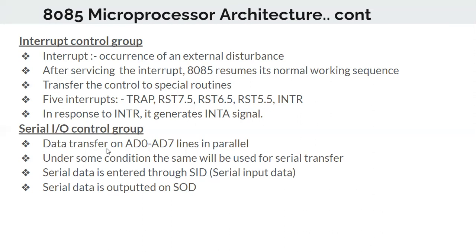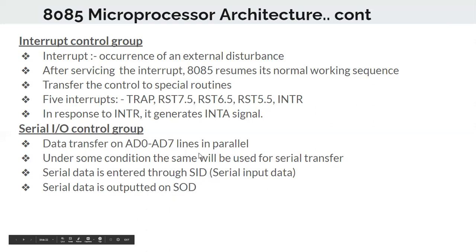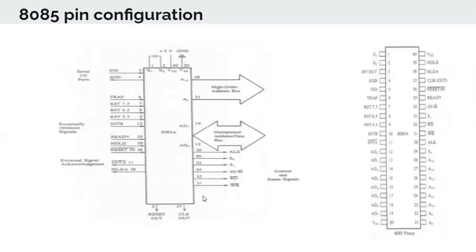The serial I/O control group controls the flow of data on the lines AD0 to AD7 during parallel data transfer. These address lines also act as data lines. Under some conditions the same lines are used for serial transfer. In parallel transfer, all data flows simultaneously; in serial transfer, data flows one bit at a time. Serial data is entered through the SID signal and output is received through the SOD signal.